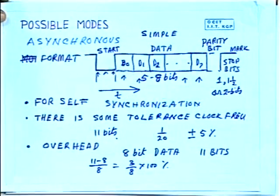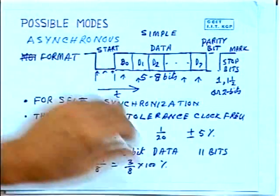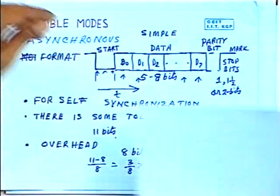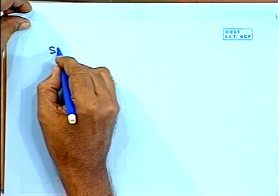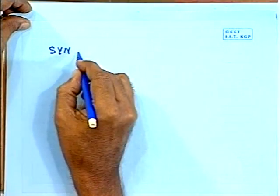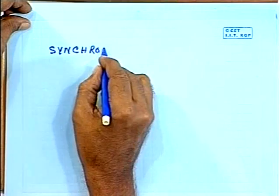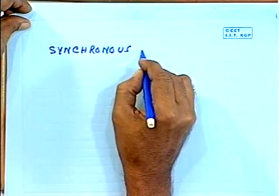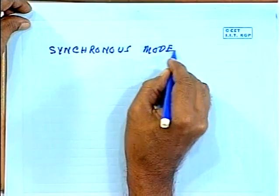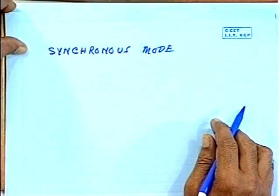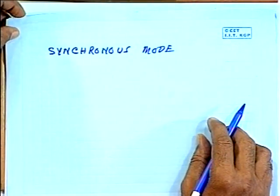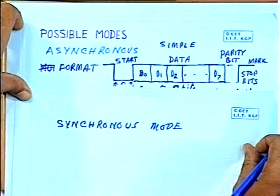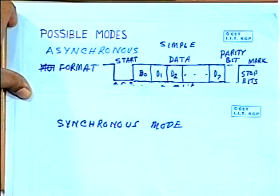If you do not want this inefficiency and do not accept this overhead, then you have to go for synchronous mode. In synchronous mode, no such framing of individual characters is done — the kind of start/stop bit framing used in asynchronous mode is not done.